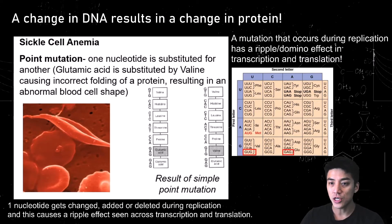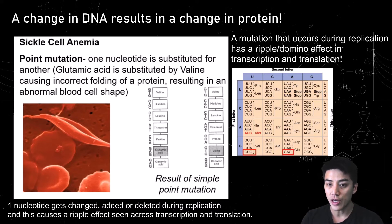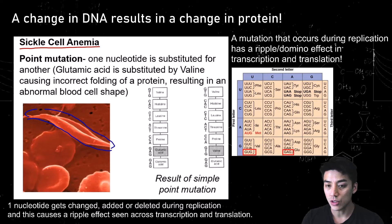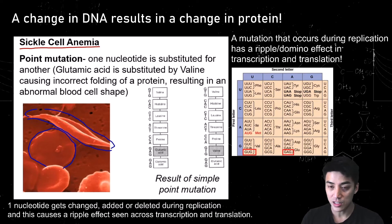A change in DNA results in a change in protein. One of the first types of mutations we'll look at is something called a point mutation, and this results in a disease called sickle cell anemia. In this disease, your red blood cell becomes deformed and elongated. Normally a red blood cell is circular and round so that it travels through the bloodstream easily, but when it's deformed it gets caught, and people with this disease tend to feel really fatigued and have shortness of breath.